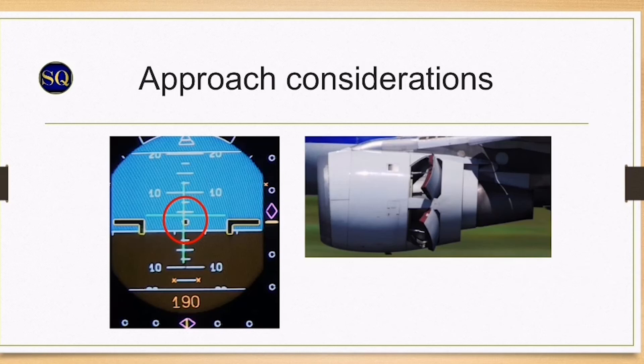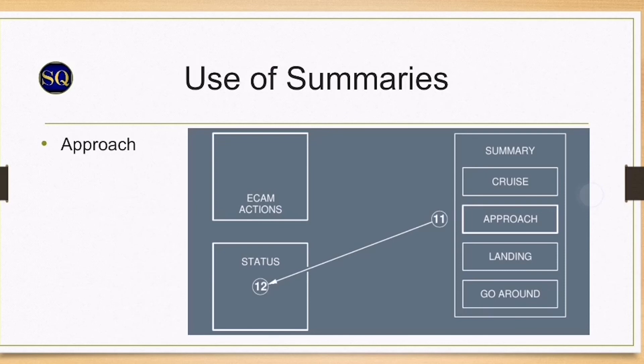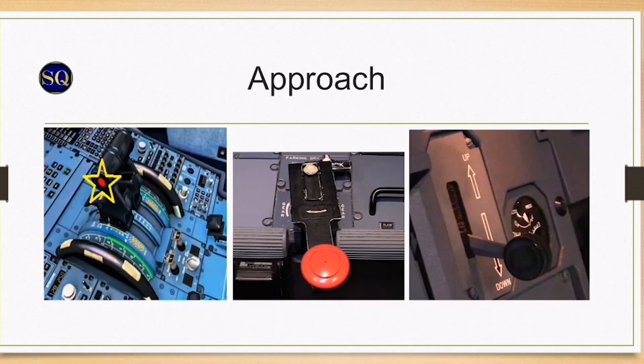Let's go through the approach phase. Approach at selected speed of 200 knots or green dot. Select auto thrust to off. Lower gear using gravity gear extension checklist from QRH summary. Like I said earlier, selecting gear down puts the aircraft into direct law and it will give the pilot manual control of the THS to allow more pitch control of the aircraft.